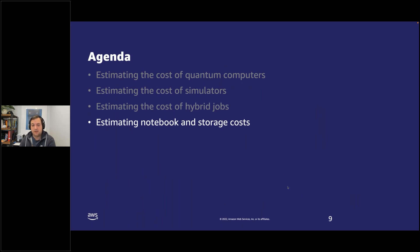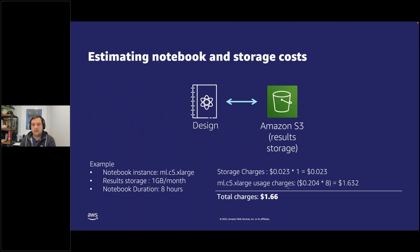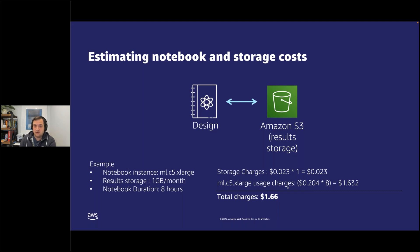The other main component of Amazon Braket is notebook and storage costs. Storage primarily uses S3 to store the results from quantum computers, and the design of algorithms and basic data science is all conducted in a notebook. In this case, the notebook instance is an ml.c5.xlarge, with a conservative one gigabyte per month of results storage, and eight hours of notebook usage per month. That gives us storage charges of 2.3 cents for the month and a notebook utilization cost of $1.63, for a total charge of $1.66.